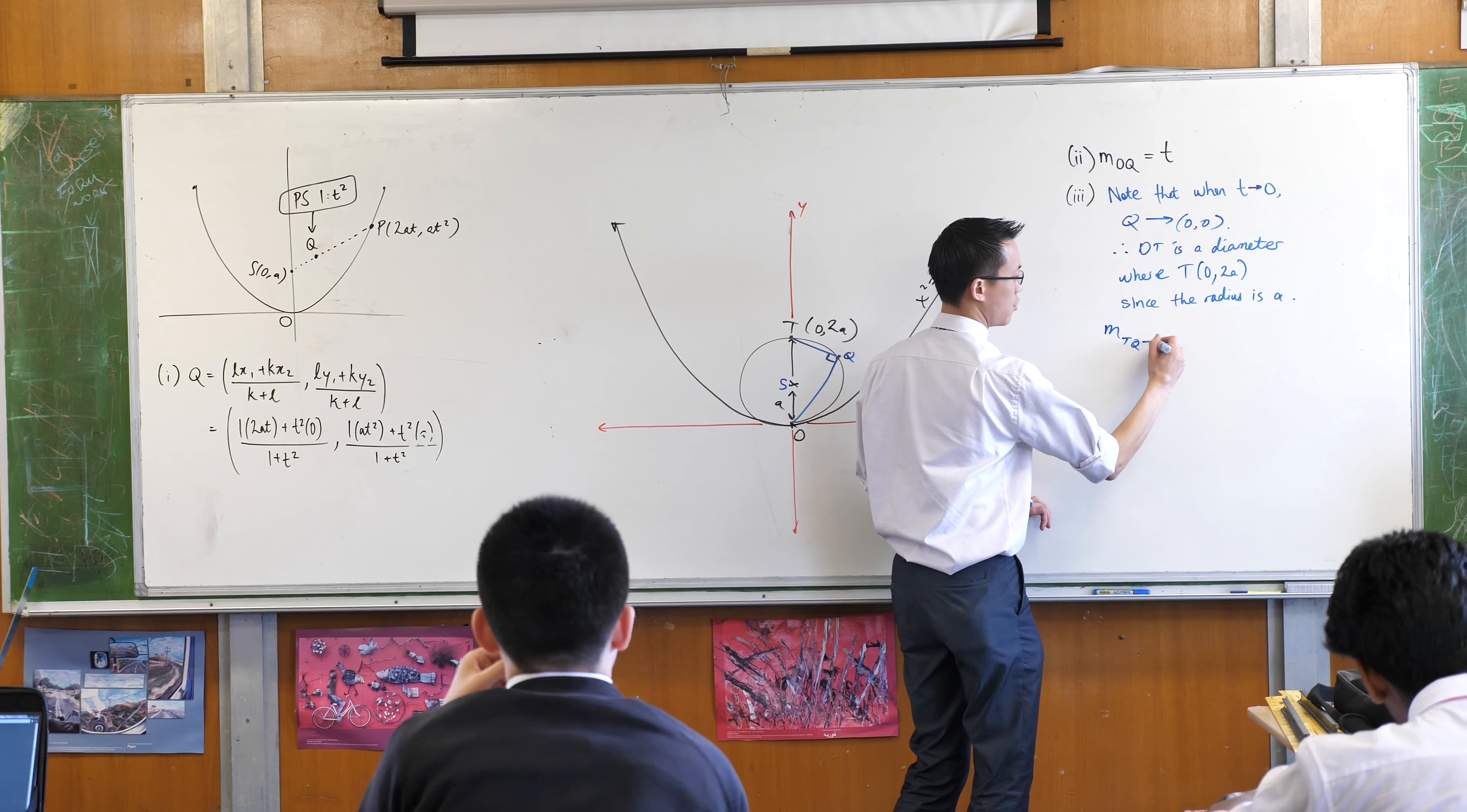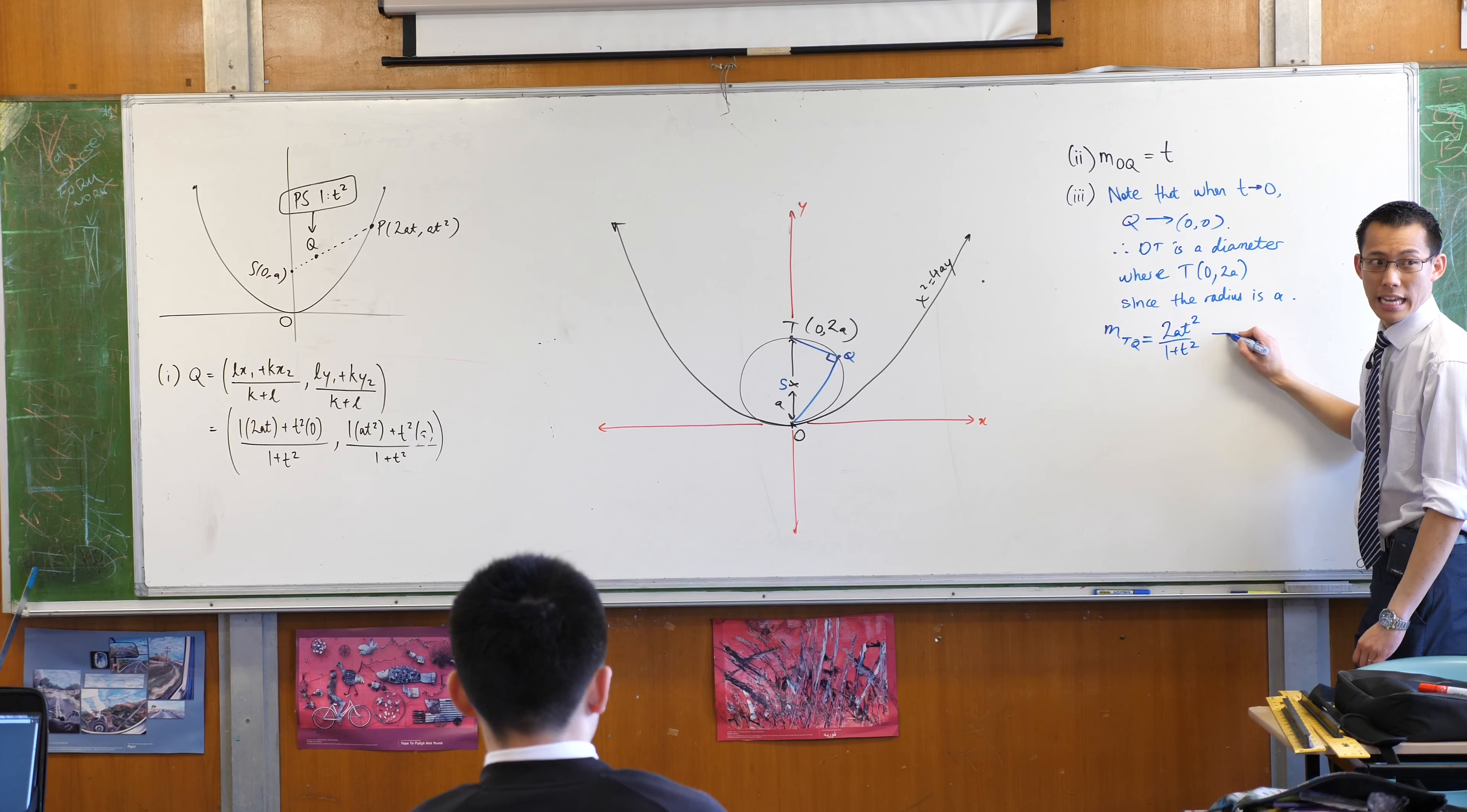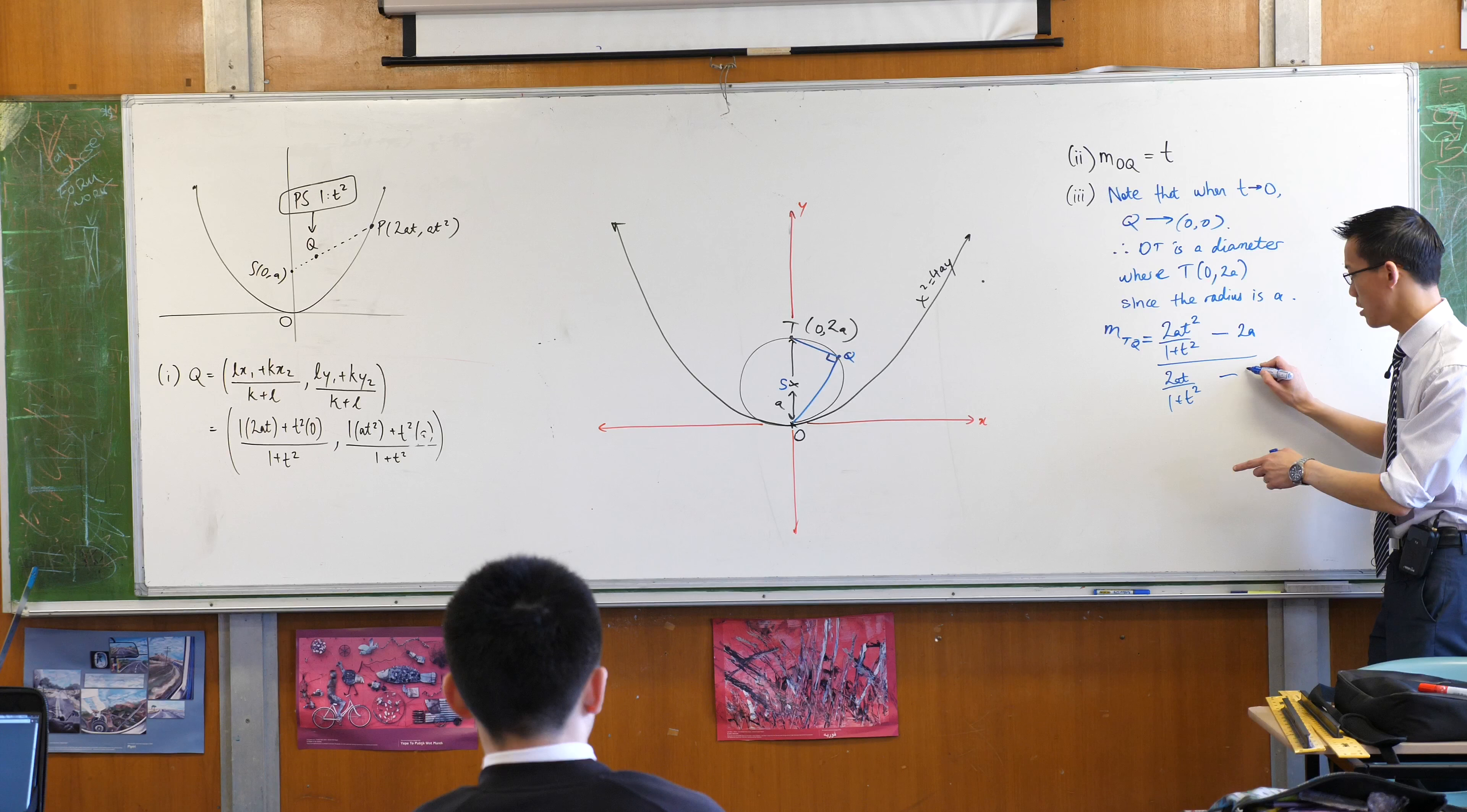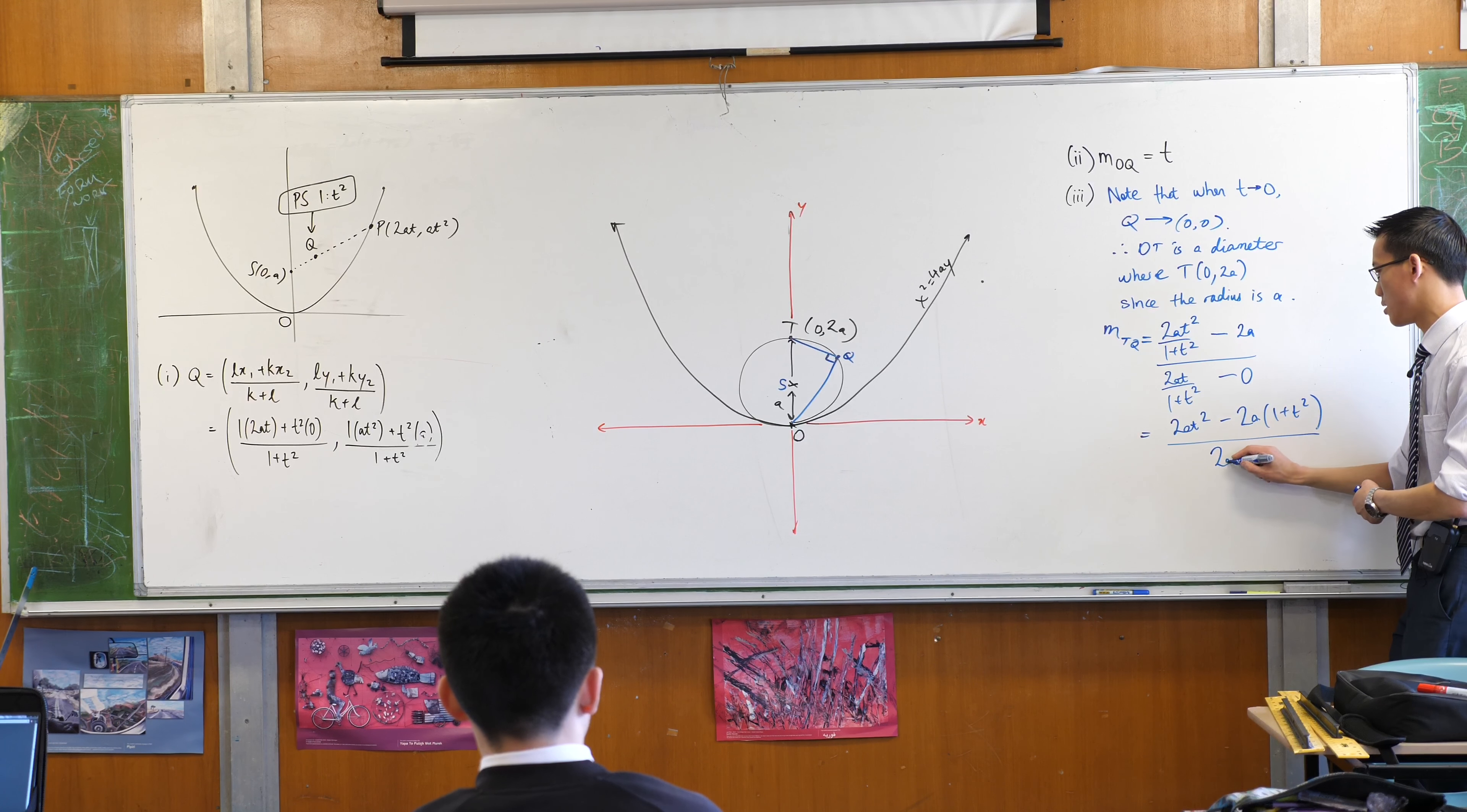I can say that the gradient of TQ is equal to, alright, help me work it out. Let's do it. So what's the rise? This thing here, remember? It's 2AT squared on 1 plus T squared, take away 2A. All divided by, what's the run in this case? It's 2AT on 1 plus T squared, is what we proved earlier, minus 0. That's convenient. Fractions on fractions. Gross, what would you like me to do? Multiply through. So that leaves me with 2AT squared there. There's the 1 plus T squared that I multiply through by.